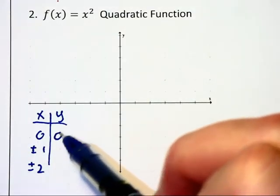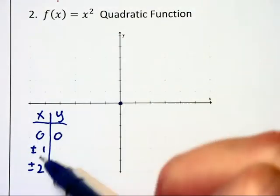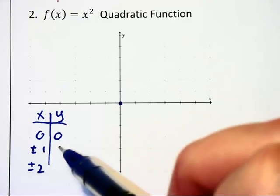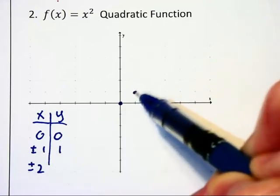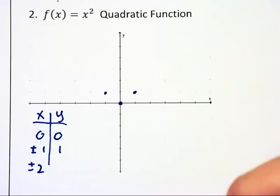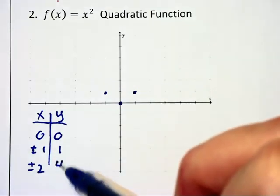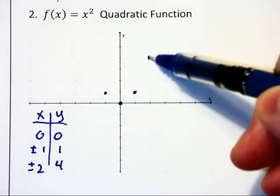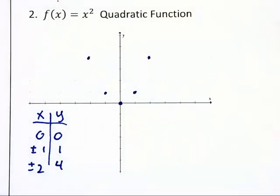Now the rule for this equation says square the x value. So 0 squares to 0 giving you the point 0, 0. Both 1 and negative 1 square to 1 which gives you 2 more points on this graph. And 2 and negative 2 both square to 4 which gives you points at 2, 4 and negative 2, 4.